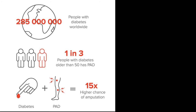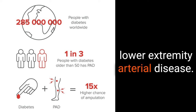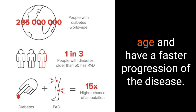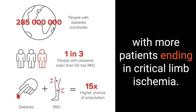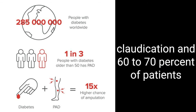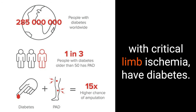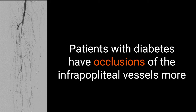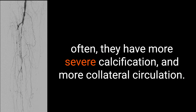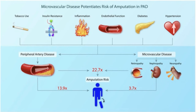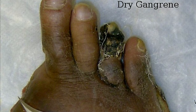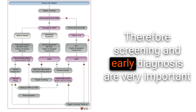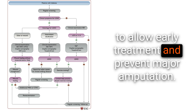Now let's move on to diabetes and peripheral arterial disease. 20 to 30% of patients with diabetes have lower extremity arterial disease. Patients with diabetes develop disease at a younger age and have faster progression, with more patients ending in critical limb ischemia. Up to 30% of patients with intermittent claudication and 60 to 70% of patients with critical limb ischemia have diabetes. Patients with diabetes have occlusions of the infrapopliteal vessels more often, more severe calcification, and more collateral circulation. The presence of microvascular disease such as retinopathy, nephropathy, or neuropathy also increases the risk of amputation. Pain is often masked by peripheral neuropathy, so atherosclerosis is often more advanced with tissue loss when first diagnosed. Screening and early diagnosis are therefore very important to allow early treatment and prevent major amputation.